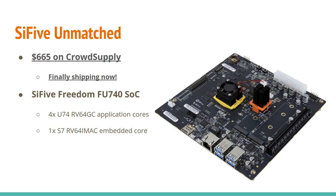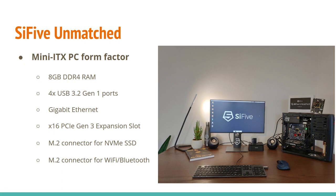Last year SiFive announced the follow-up to the Unleashed, called the Unmatched. Instead of $1,000, this one is $665 — also available on CrowdSupply, and now shipping to backers with distributor availability coming soon. It has a new SoC called the FU740 with four 64-bit RISC-V cores, the next generation of SiFive core design. The really interesting thing is it comes in a mini-ITX PC form factor with 8 gigabytes of memory, USB 3, gigabit Ethernet, a PCIe expansion port, and slots for an NVMe M.2 drive or Wi-Fi and Bluetooth — so you can have a full development workstation running natively on RISC-V.